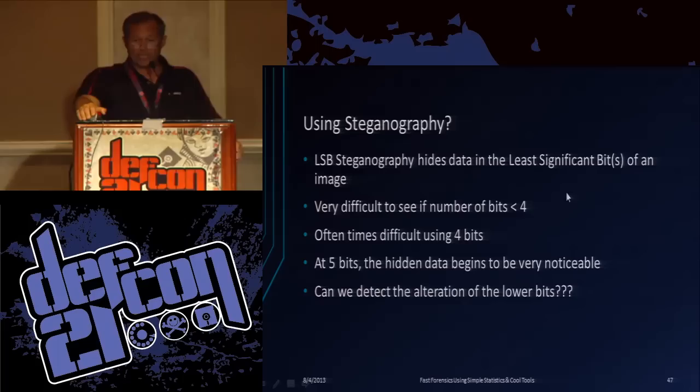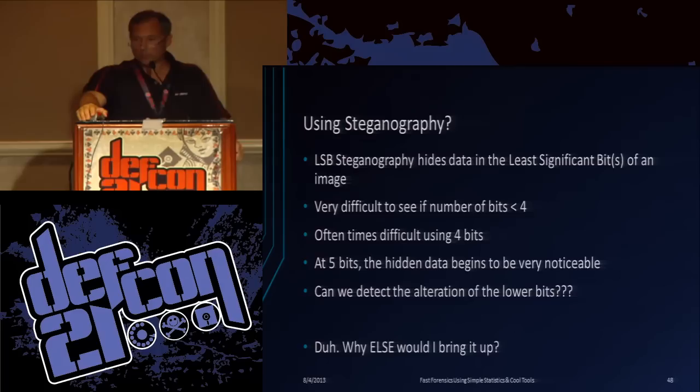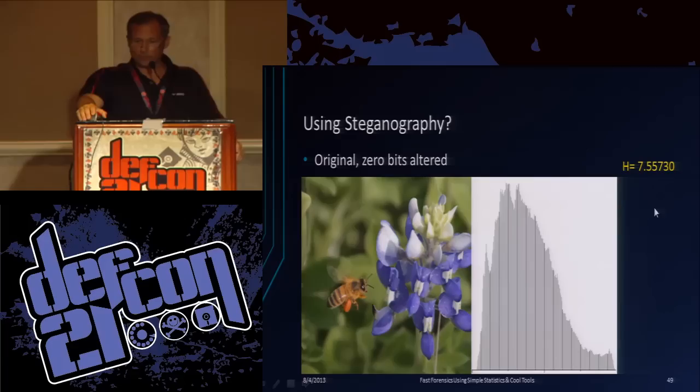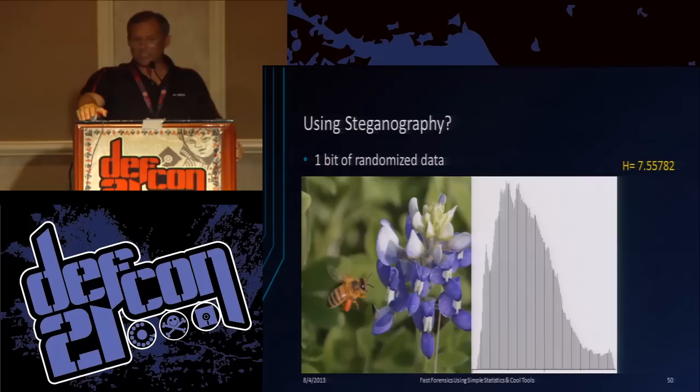Are we using steganography? LSB steganography is very difficult to see if the number of bits is less than four. There are some cover images where you can see them but others where you can't. At four bits in a normal picture you can't even tell. Five bits is when you can really start to tell. So what about with the histogram? Here's Honeybee, the original - you can see a fairly smooth histogram. Entropy 7.55. Then we go to one bit of randomized data. Tough to tell on that one - that would not raise my alert flag looking at that histogram. It's a little spiky but not too much.